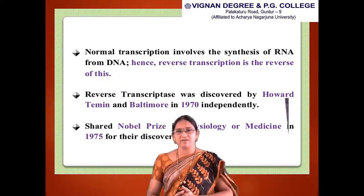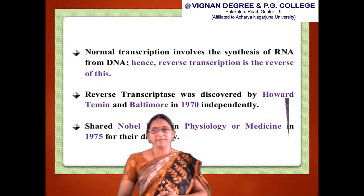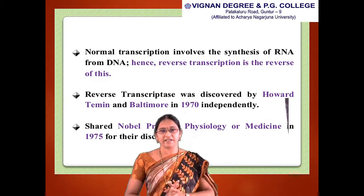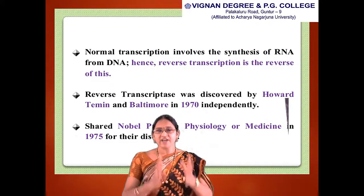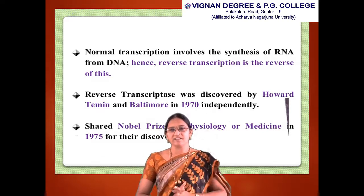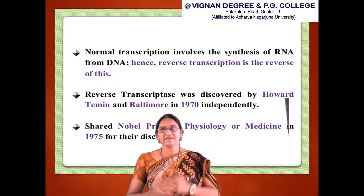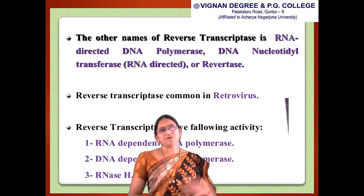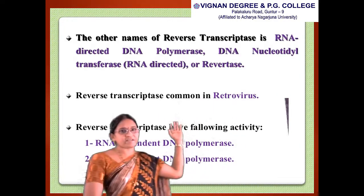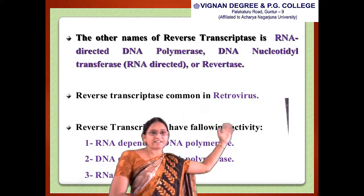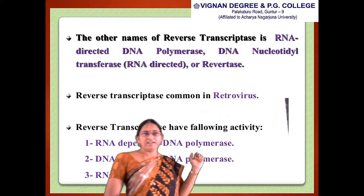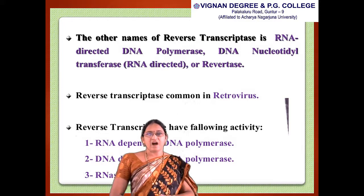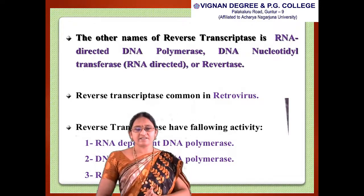Reverse transcription was discovered by Temin and Baltimore in 1970 independently. They shared a Nobel Prize in Physiology or Medicine in 1975 for their discovery. Other names for reverse transcriptase include RNA-directed DNA polymerase, DNA nucleotidyl transferase, and reverse transcriptase.